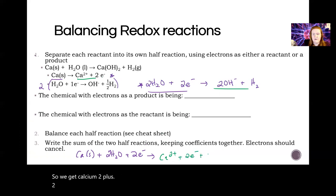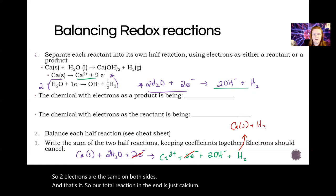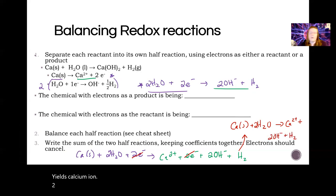So we get Ca²⁺, two electrons, two OH⁻, and one H₂. Then we look for things that cross off - two electrons are the same on both sides. So our total reaction in the end is just calcium plus two waters yields calcium ion, two hydroxides, and H₂. That's our overall balanced equation.